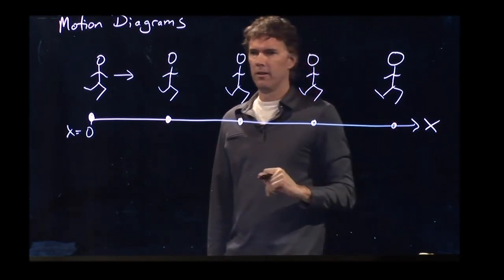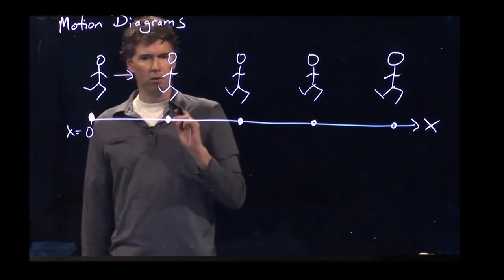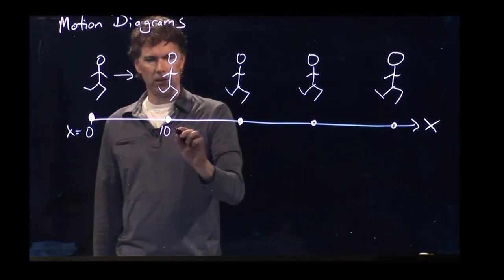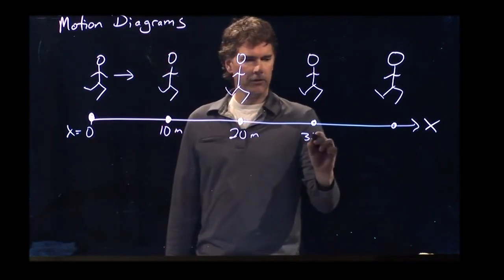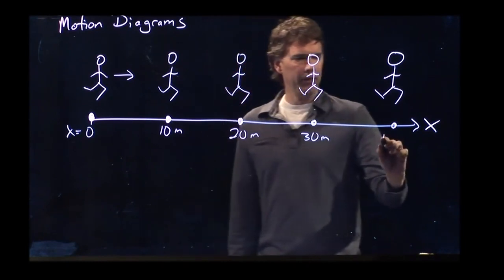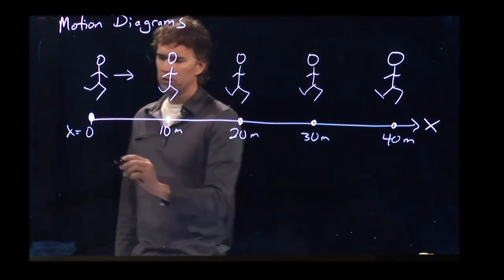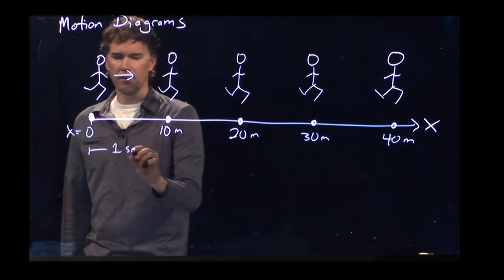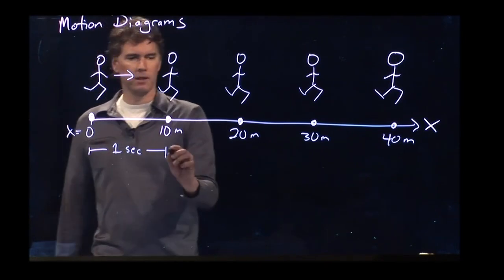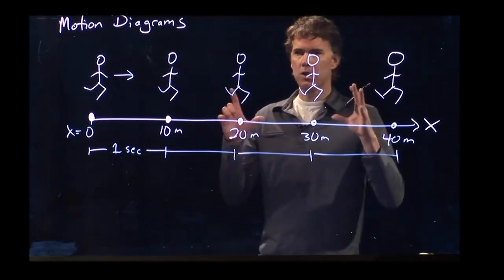And then if we give you some numbers here, it's going to make good sense. Let's say this is 10 meters, this is 20 meters, this is 30 meters, and this is 40 meters. And each interval corresponds to one second. So there's one second in between each flash of our camera.